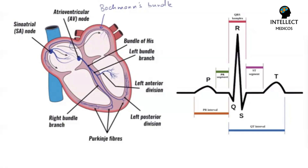If I talk about heart blocks, we need to understand the conduction system of the heart. I'll just re-emphasize and revise. The impulse is generated at the level of the SA node, or sinoatrial node. It depolarizes the right atria, and this impulse also goes to the left atrial side with the help of Bachmann's bundle. Both atria almost contract or depolarize simultaneously, and hence what we get on the ECG is the first positive deflection, which is called the P-wave.